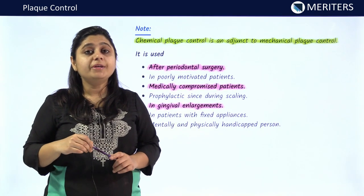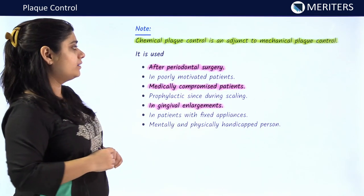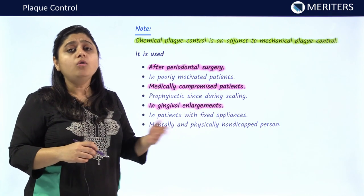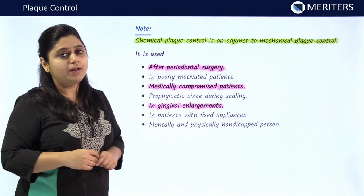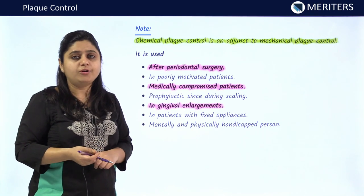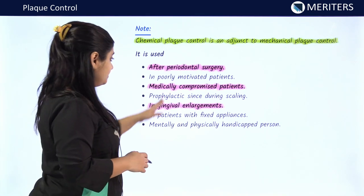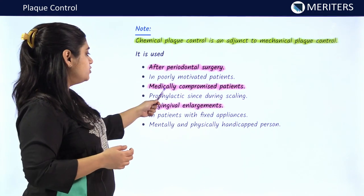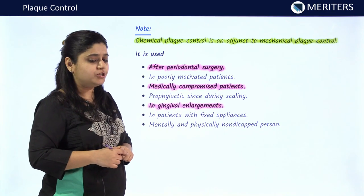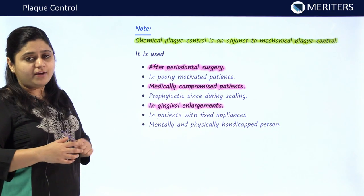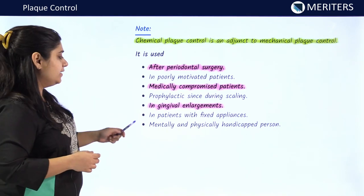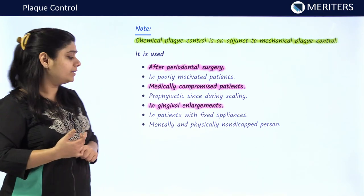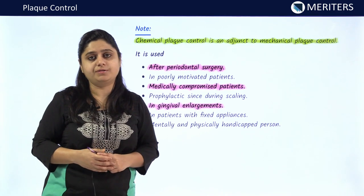Chemical plaque control cannot be used as a substitute for mechanical plaque control; it has to be used as an adjunct. Indications for chemical plaque control include use after periodontal surgeries, to reduce inflammation in poorly motivated or non-compliant patients, in medically compromised patients, prophylactically after scaling and root planing, in cases of gingival enlargement, in patients with orthodontic appliances, and in mentally and physically handicapped patients.